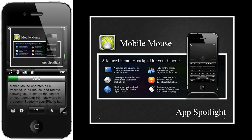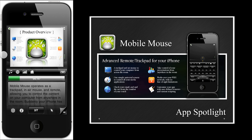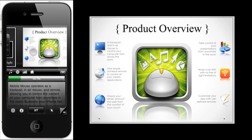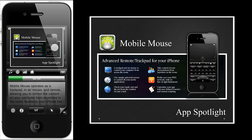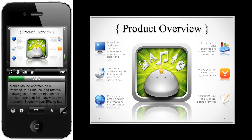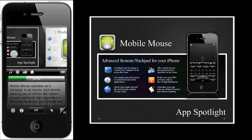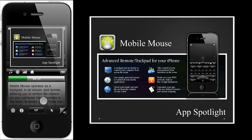To move through slides, just swipe the slide in the direction you want to go, or tap the slide to move forward or backwards. If the notes are longer than the space provided, you can scroll down to see the rest of the notes.